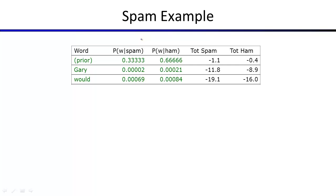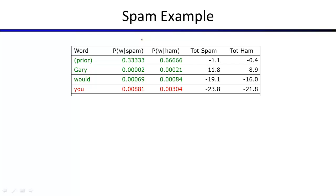Continuing through the email: 'would' appears in all kinds of emails, like 'the', and slightly increases confidence in ham. 'You' is actually slightly bad — it turns out it's about twice as common in spam emails. You wouldn't have guessed that, but if you look at the data, that's what it says. The key is: you don't type these probabilities in by hand, you look at the data, and the data drives what the probabilities are.